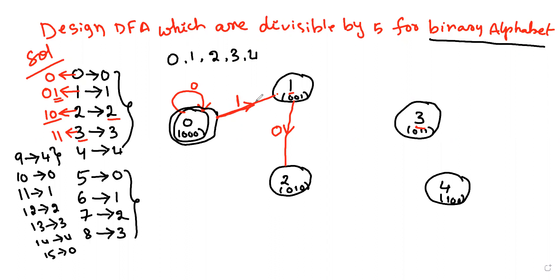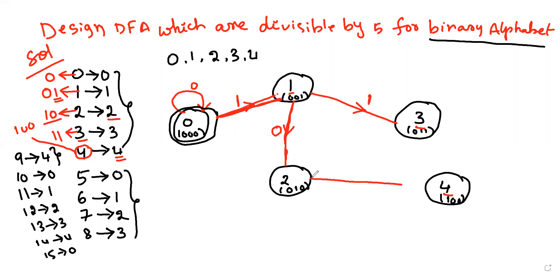For state 3 (remainder 3), binary 11, we write 1. For 4, the binary value is 100. We already have 1 and 1 at the start, so we go through: 1 is there, then 0, then 0. This gives us binary 100 for remainder 4.